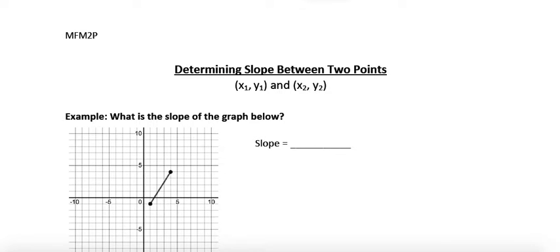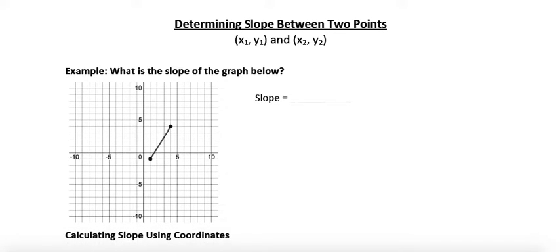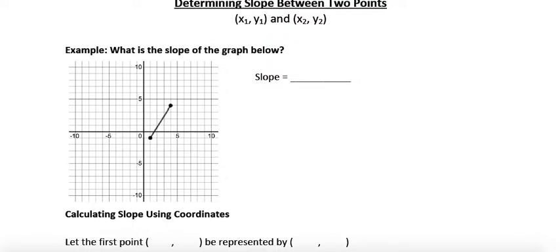Determining slope between two points. In the last lesson we reviewed how we find the slope of a graph from a graph. We do that by drawing our triangle that would be made between these points and looking at the rise over the run.